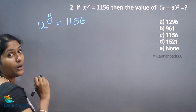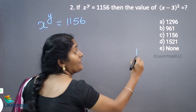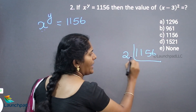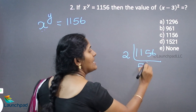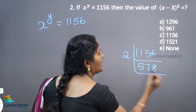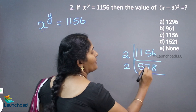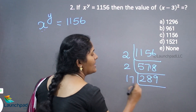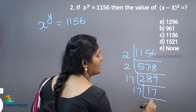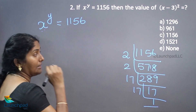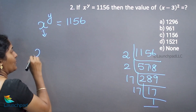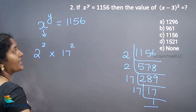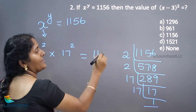x to the power of y is equal to 1156. Using the prime factorization method on 1156, dividing repeatedly by 2 and then by 17, we get 1156 equals 2 squared into 17 squared.